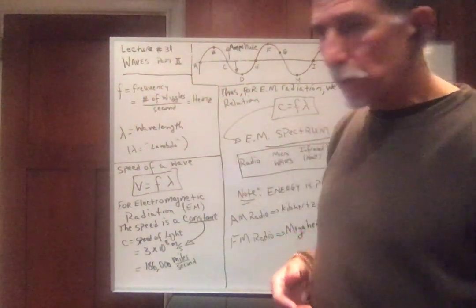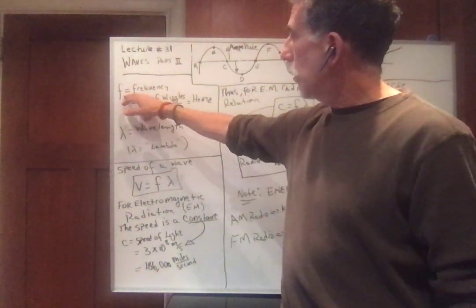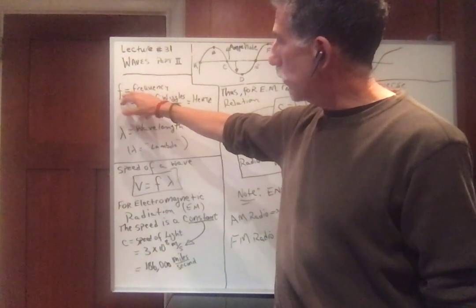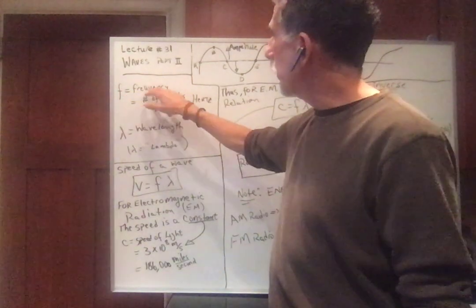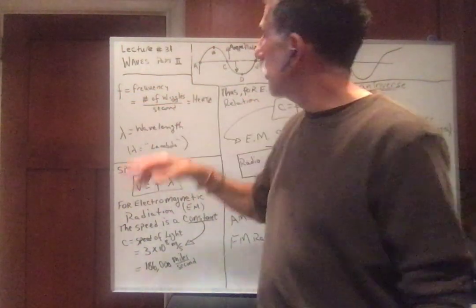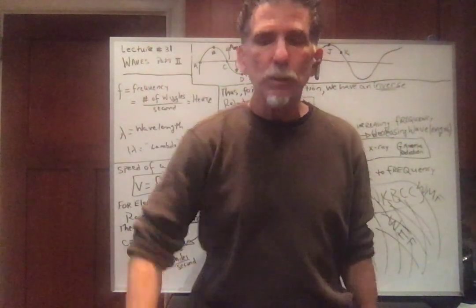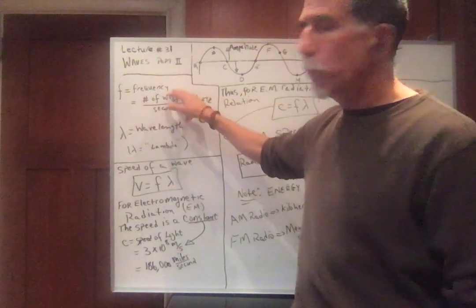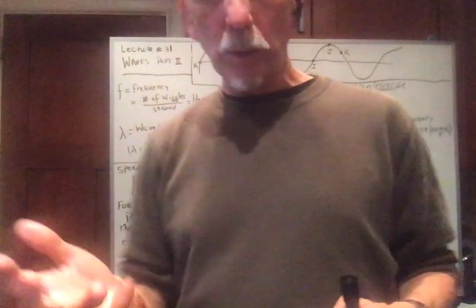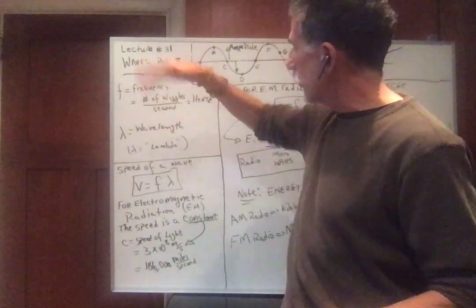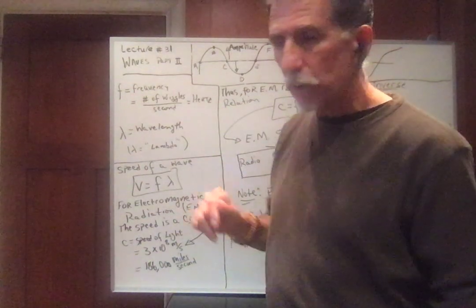We're going to talk about the specifics of waves now. One thing we're going to be interested in is the frequency, F. Frequency is the number of wiggles per second. The unit is called a hertz, so how fast a wave wiggles is called the frequency. It's number of wiggles or oscillations per second. That unit is called a hertz.